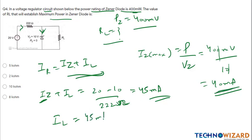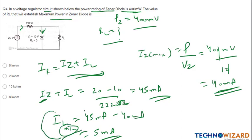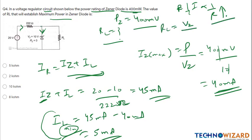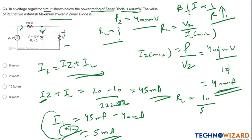Since IZ is 40 milliampere, IL minimum equals 45 minus 40 equals 5 milliampere. When IL is minimum, the resistive load is higher because current is inversely proportional to resistance. Therefore RL equals VZ divided by IL minimum equals 10 volt divided by 5 milliampere, which equals 2 kilo ohm. The resistive load will be 2 kilo ohm.